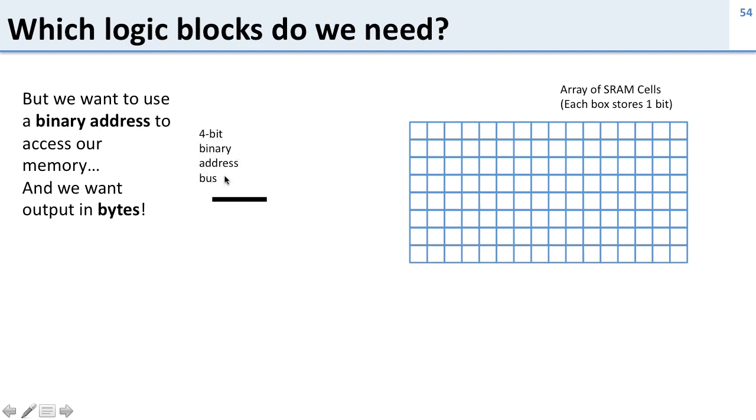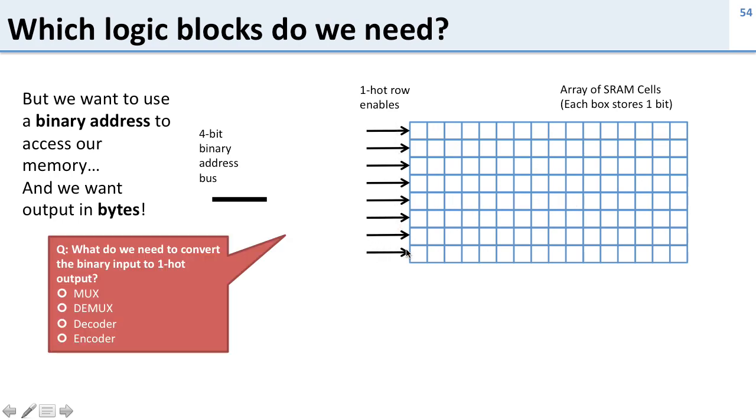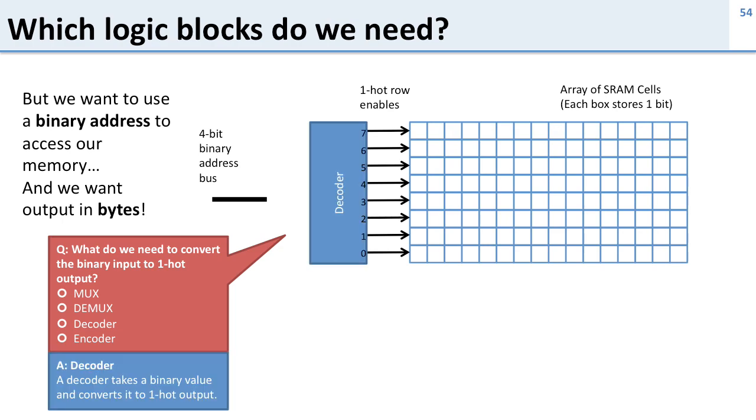Here's our 4-bit binary input bus and it's 4 bits because we have 16 bytes in our memory array here so we need 4 bits to address all those bytes and we've got our one hot row enables because we're going to enable one row at a time to read it out. So what do we need to put in here? What logic block do we need going from our binary address to our one hot enables? Well we need a decoder because a decoder does exactly that. It's going to take in a binary address and it's going to activate just one of the outputs.